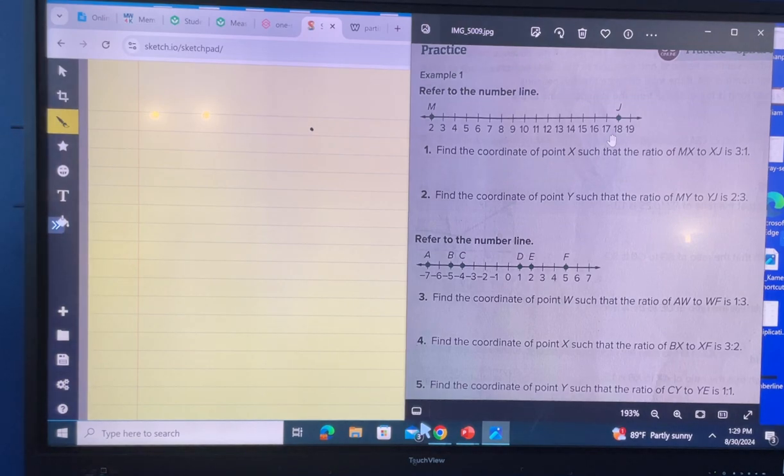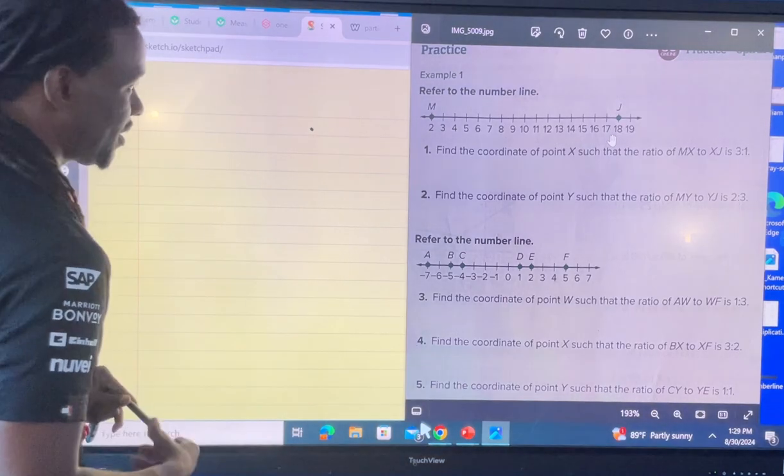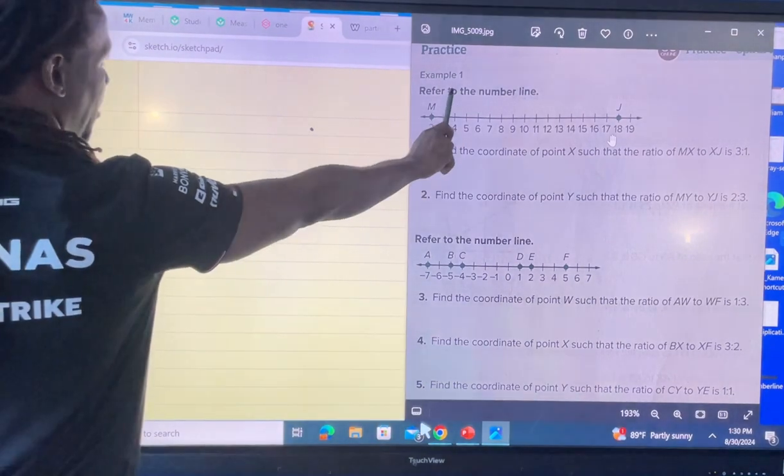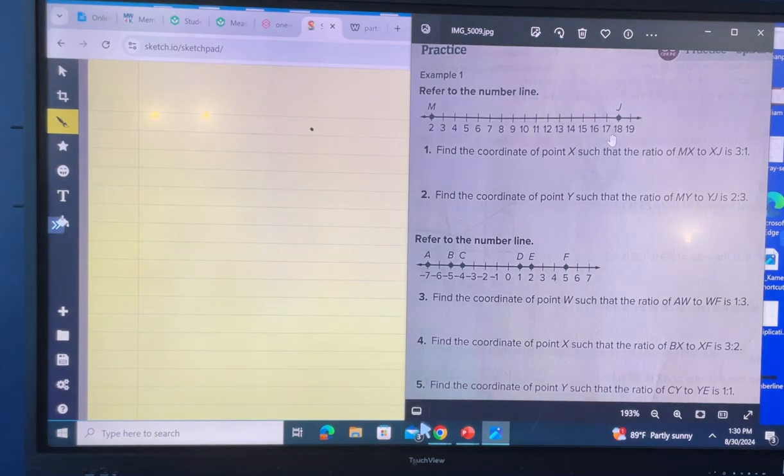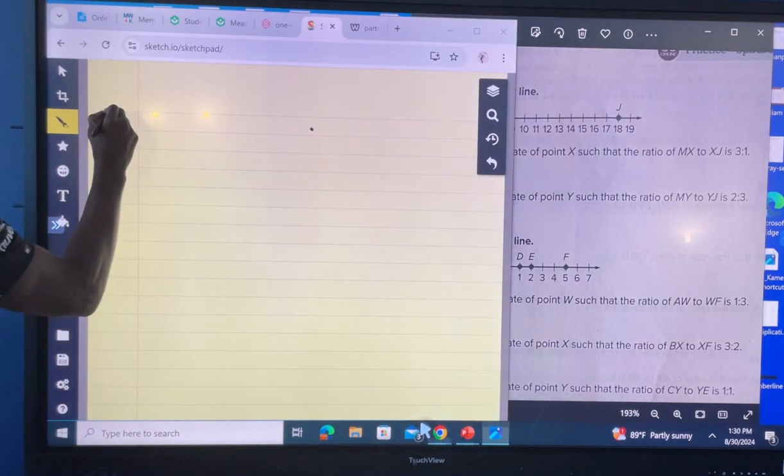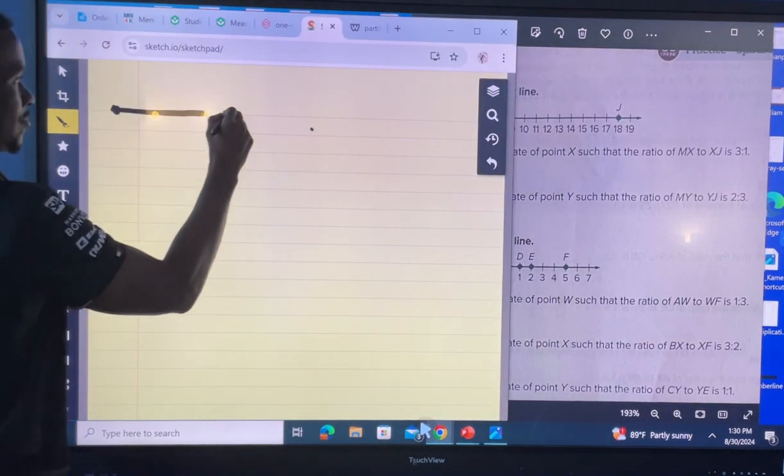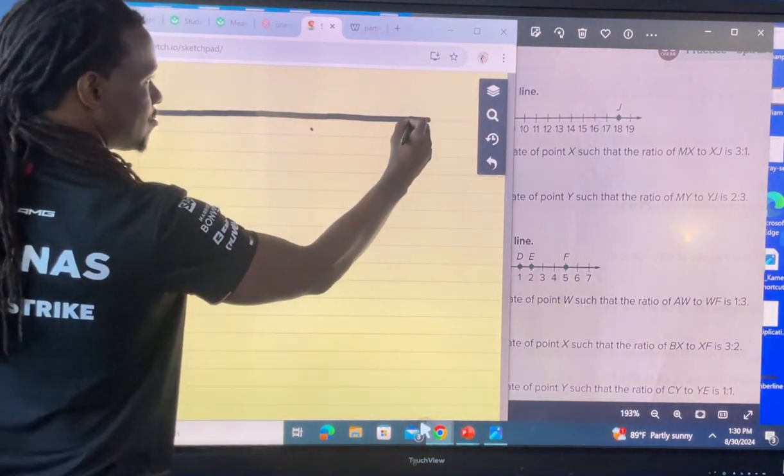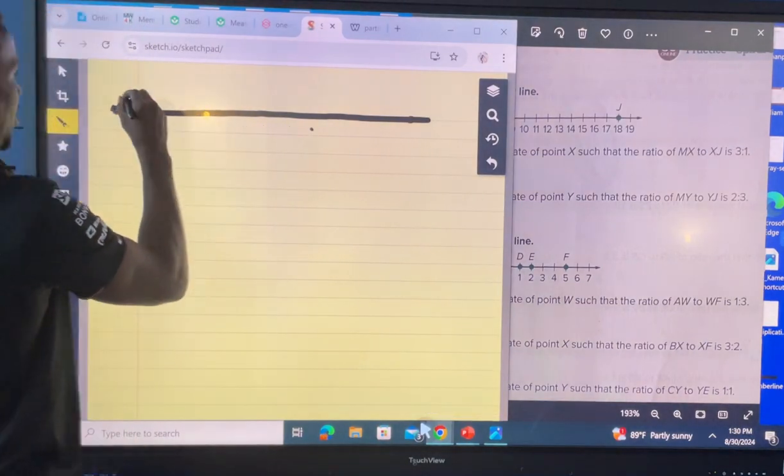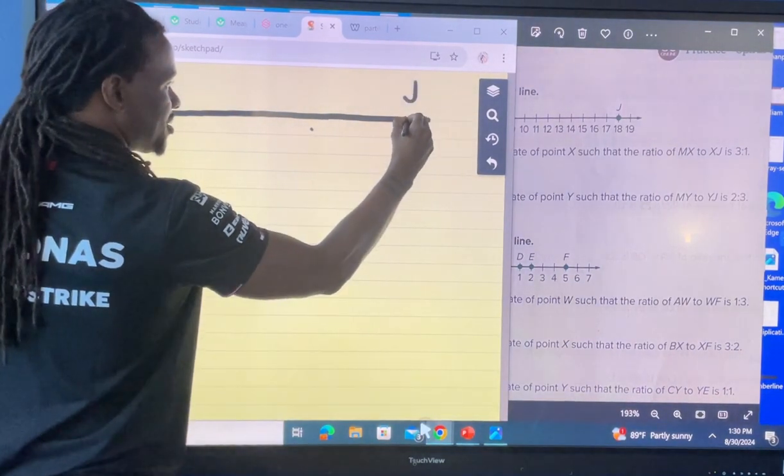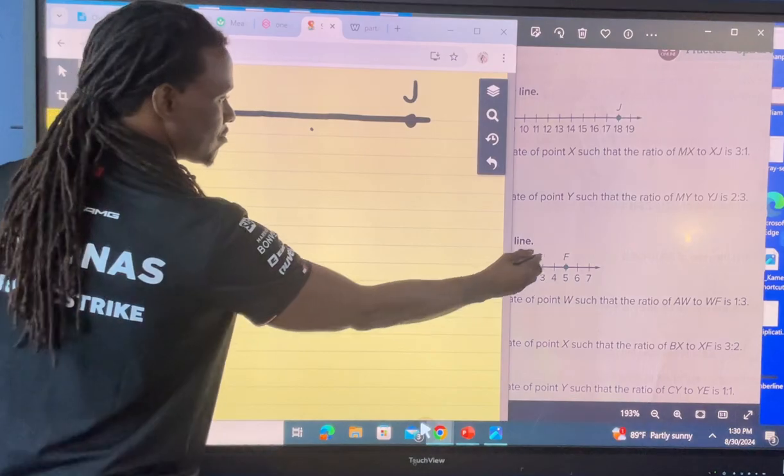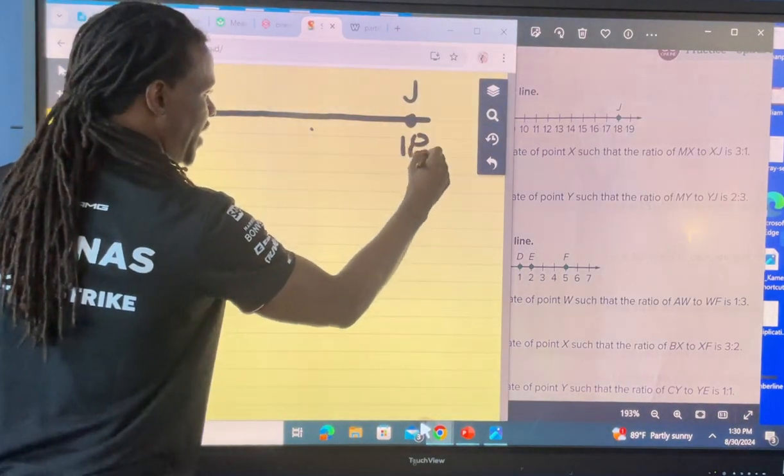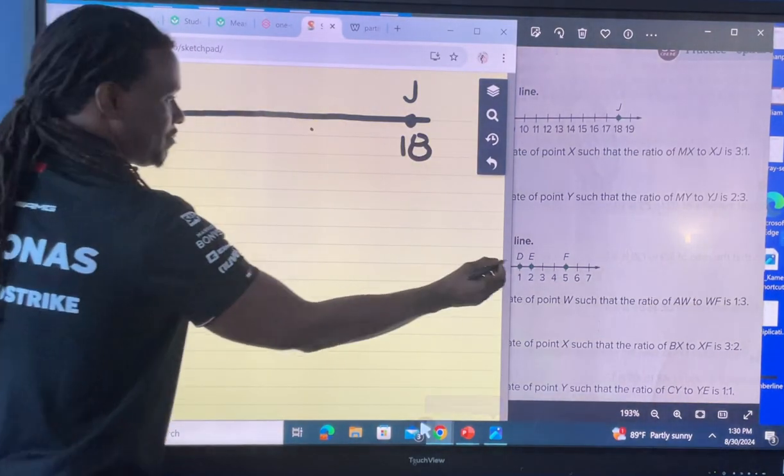Remember, the homework is not going to be due until Wednesday, no school Monday. What we got here is they're telling us to refer to this number line, right? Let me draw it out real quick. And this number line had an M and a J on it, and it looks like M was at 2, J is at 18, and we got all of this in between.